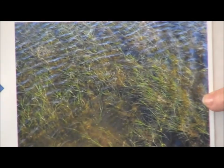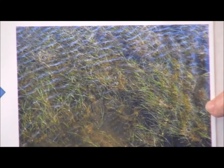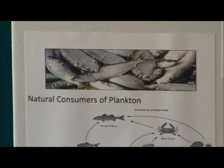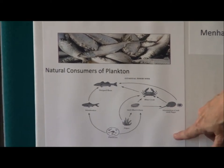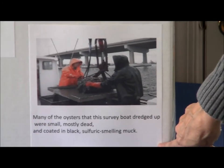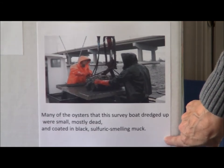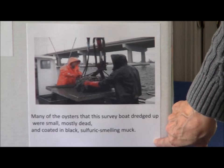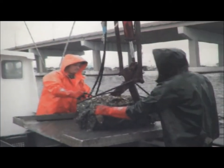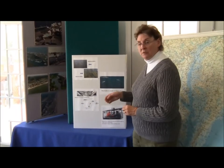Down here we have where some purifications have been put in place and the water grasses are now surviving. Also here we have where the menhaden are being caught with huge nets — it takes two boats to pull those nets together to draw in the fish. Down here is the coastal food web, in which the menhaden play an active role. And here is an example of oysters pulled from a small but mostly dead area, coated black with sulfuric-smelling muck — some of the things important to the coastal food web.